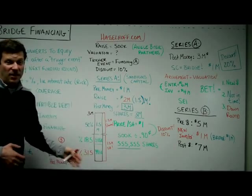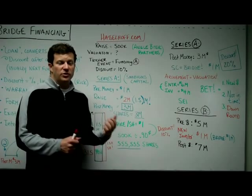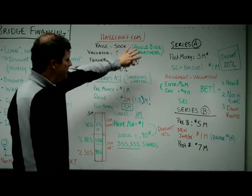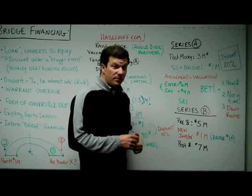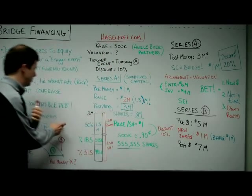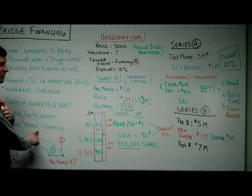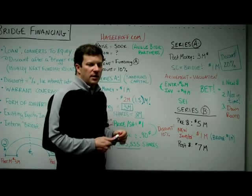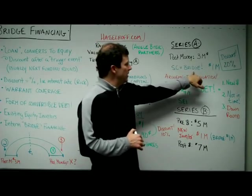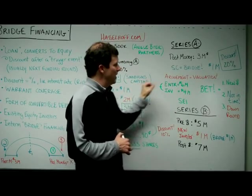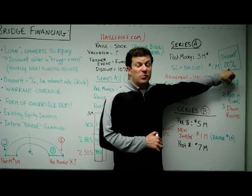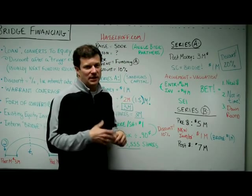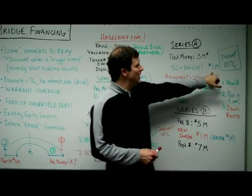Now let's talk about what happens after that — moving from Series A to Series B, which is exactly what a bridge financing is supposed to help with. The Hasselhoff.com team starts building the website, selling David Hasselhoff videos, and starts running out of money. They go back to their original investors and say they need a bridge loan to get to the next round. Snobulus Capital agrees to give them $1M bridge with a 20% discount, meaning they'll get more shares than they normally would for that million dollars.